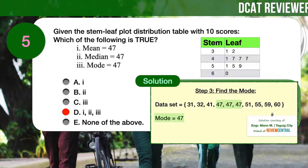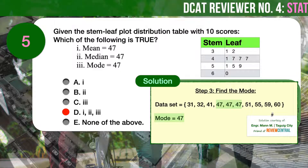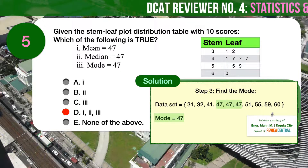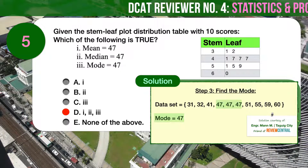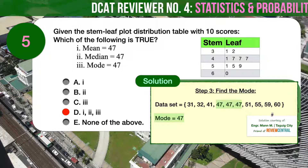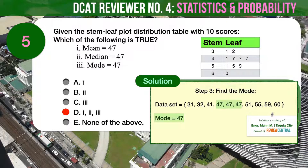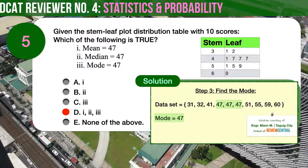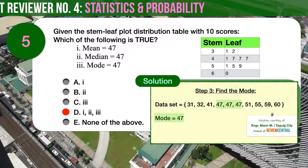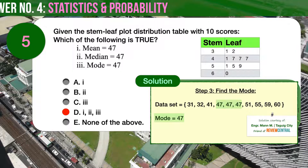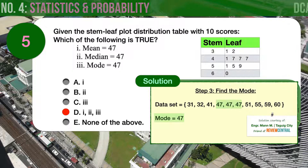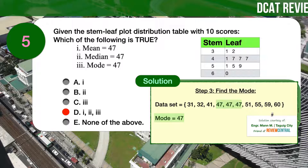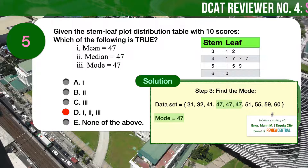Lastly, let's find the mode. The mode is the number that occurs most often in a given data set. In our data set, the number that occurs most often is 47, which occurs three times. Therefore, the mode is 47, and 3 is likewise true. That is why the correct answer is D — 1, 2, and 3 are all true.